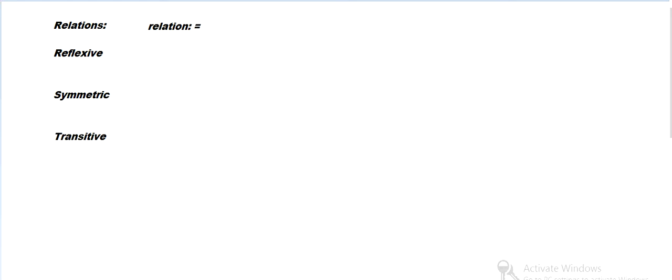First example, let's look at the relation equals, so like two numbers are related to each other if they are equal to each other. Let's look at that. So we can check. Well, every number is equal to itself, so it's related to itself, so we call that reflexive if something is related to itself or equal to itself in this case.